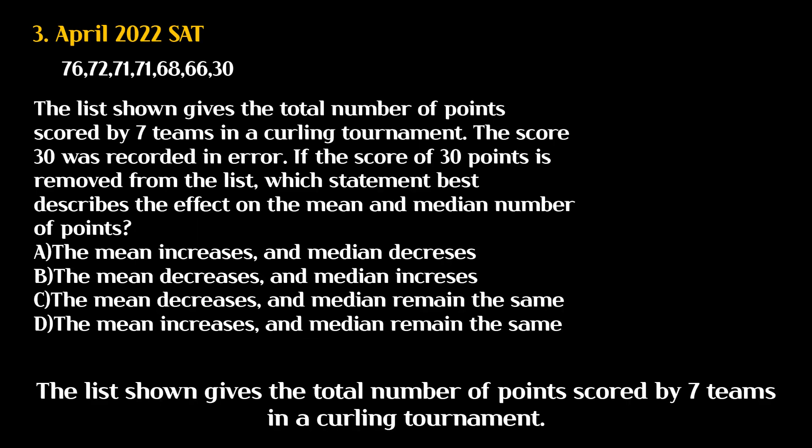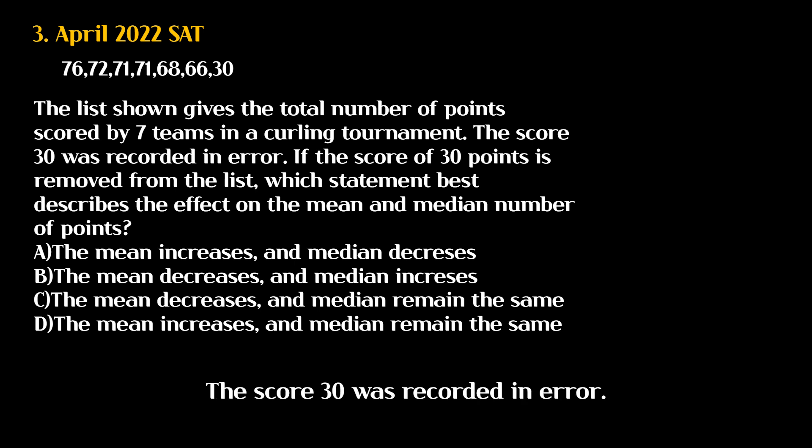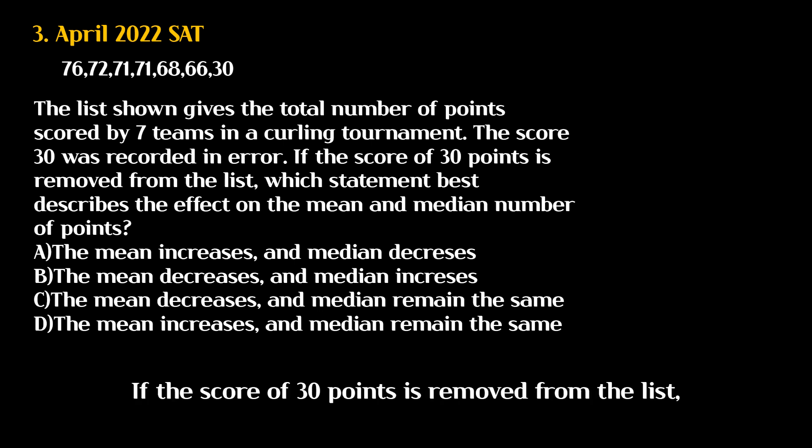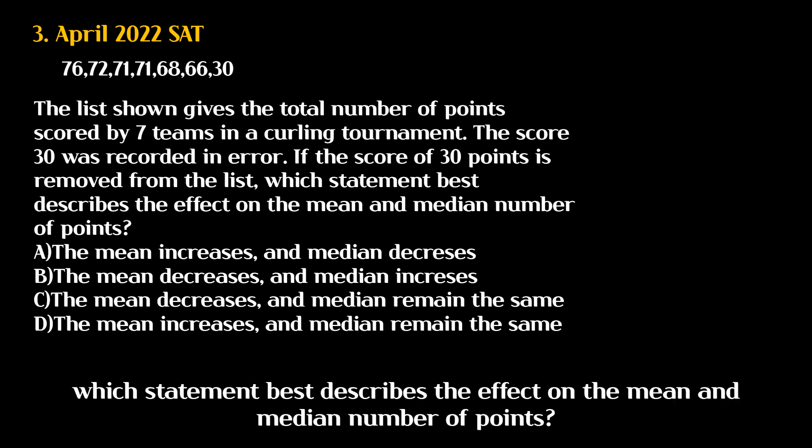The list shown gives the total number of points scored by seven teams in a curling tournament. The score 30 was recorded in error. If the score of 30 points is removed from the list, which statement best describes the effect on the mean and median number of points?